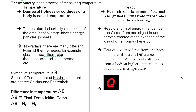Write the first definition as a star point in the first column of your notebook. The second star point is: temperature is a measure of the average kinetic energy that particles possess. From today onward, remember that every object has molecules, atoms, and particles in it. These particles vibrate and move; their vibration and motion result in kinetic energy. The average of this kinetic energy represents temperature.